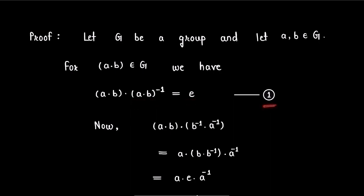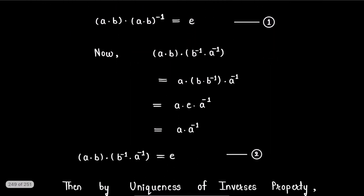Now we have (a·b)·(b^(-1)·a^(-1)) using associativity property in group. We can write this as a·(b·b^(-1))·a^(-1).